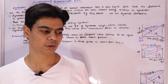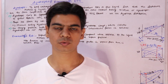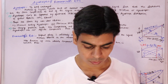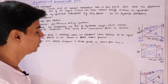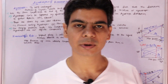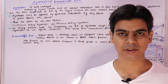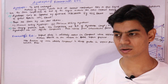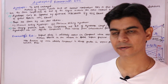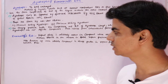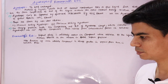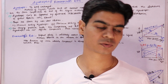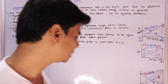In this video lecture we will go through azeotropes and Konovalov's law. The word azeotrope is taken from a Greek word which means to boil unchanged. Before we understand what is an azeotrope, let's first understand what is fractional distillation.